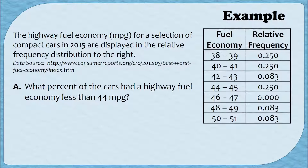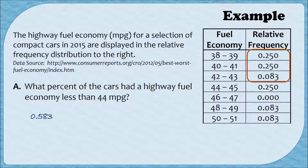Part A asks what percent of the cars had a highway fuel economy less than 44 miles per gallon. We look at all classes with fuel economies less than 44: the 38–39, 40–41, and 42–43 classes. Since relative frequencies are the same as percent in decimal form, we add those relative frequencies together to get 0.583. Since the question specifically asks for a percent, we convert: moving the decimal point right gives us 58.3%.